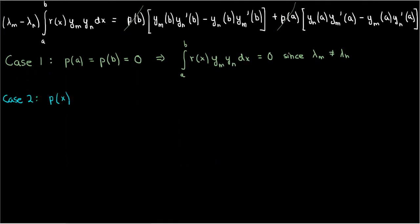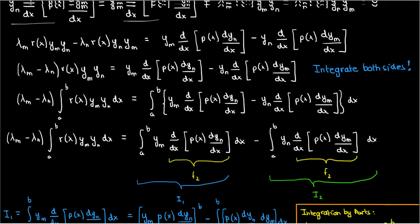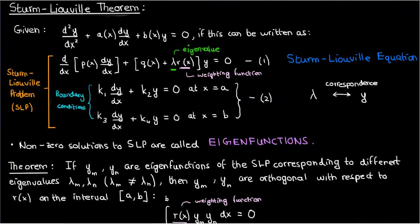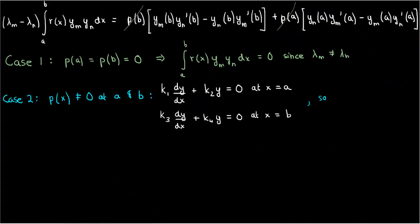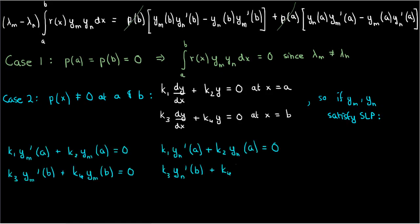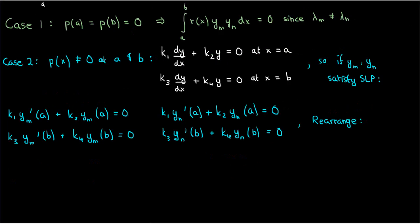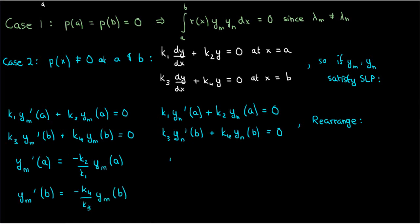The second case occurs when p(x) is not zero at x equals a or x equals b. For this situation, we'll have to go back to the boundary conditions from the Sturm-Liouville problem. Since y_m and y_n are both eigenfunctions, they must satisfy not only the Sturm-Liouville equation but also the boundary conditions. Rearranging in terms of the derivative terms evaluated at the boundaries, we get: y_m'(a) equals negative k₂/k₁ times y_m(a), and y_m'(b) equals negative k₄/k₃ times y_m(b). Similarly, y_n'(a) equals negative k₂/k₁ times y_n(a), and y_n'(b) equals negative k₄/k₃ times y_n(b).